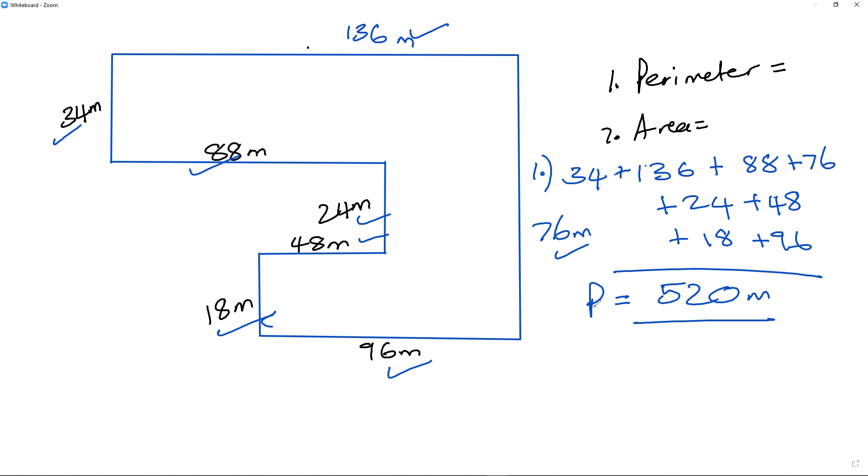Now the area. What I'm going to do is divide it into rectangles. So I'm going to divide it into rectangles for the area. Okay, there's rectangle number one. This is going to be rectangle number two. And then rectangle number three will be this one at the bottom. Okay, so we divide it into rectangles.